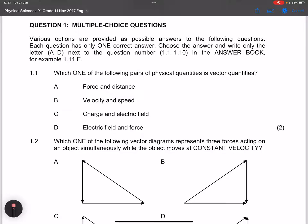Let's look at the first option: force and distance. Well, distance is not a vector quantity. Velocity and speed - speed is not a vector quantity. Charge is not a vector quantity. And the last one, they say electrical field - it is a vector as well as force. So in that case, our answer there should be D.